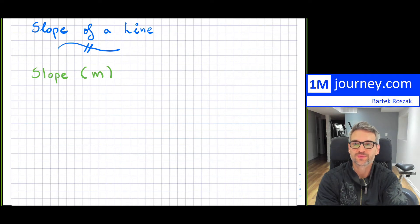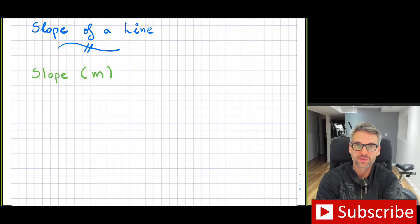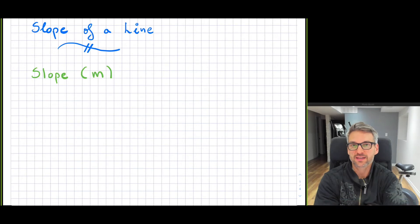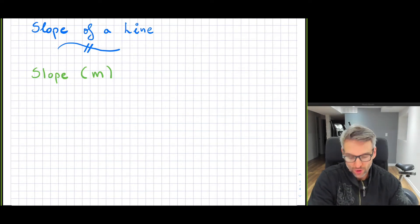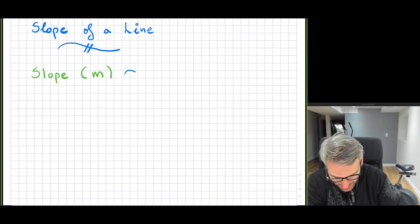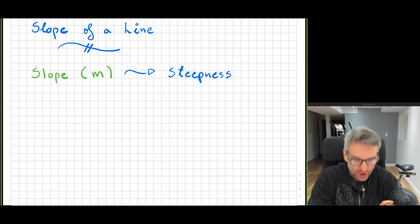What is exactly a slope? Slopes belong to lines. There are obviously many other slopes you'll encounter as you go through your mathematical career. Starting off, we like to designate slope with the small letter M. It is just a convenient way of using the variable M to designate slope. Slope is nothing else but simply the steepness of a line.